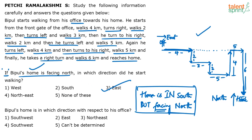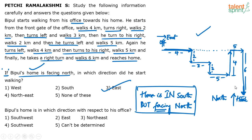So if Bipul's home is facing north, then he started walking in the east direction — the answer is east. We are lucky that our assumption was correct, meaning the home is indeed facing north. If it were not facing north as per our path, we would rotate by 90, 180, or 270 degrees — that concept is discussed in earlier advanced direction examples.